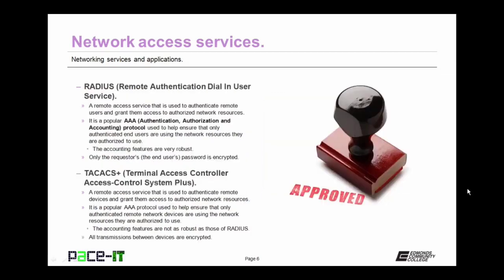Another network access service is RADIUS — Remote Authentication Dial-In User Service. RADIUS is a remote access service used to authenticate remote users and grant them access to authorized network resources. It is a popular AAA protocol — Authentication, Authorization, and Accounting. It's used to help ensure that only authenticated end users are using the network resources they are authorized to use. The accounting services of RADIUS are very robust. The only drawback to RADIUS is that only the requester's password is encrypted — everything else gets sent in the clear.